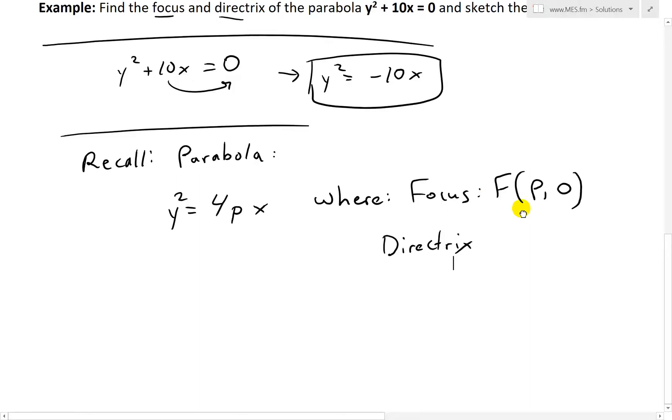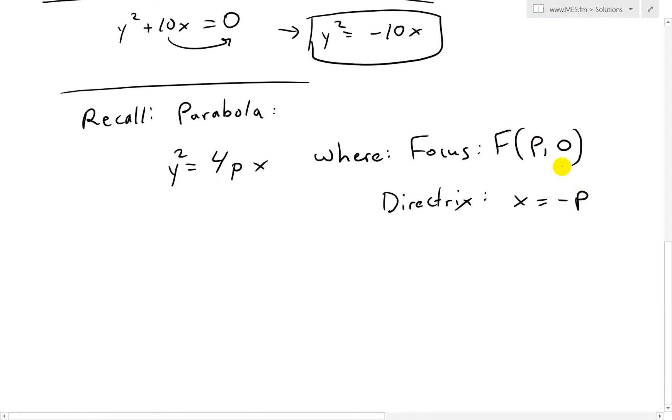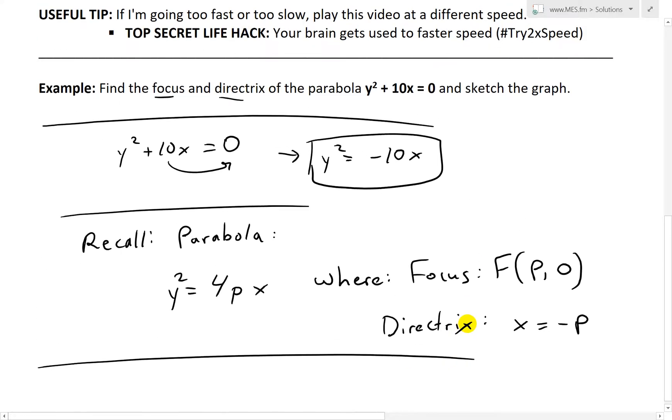And the directrix is an equation of a vertical line where it's just going to be x = -p, just a vertical line like that.